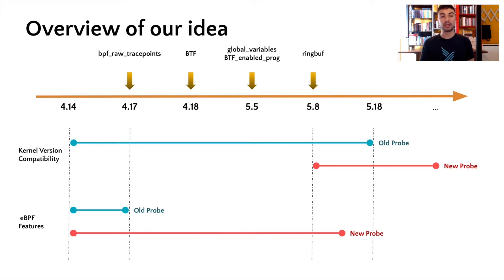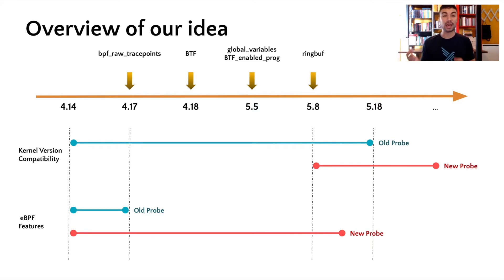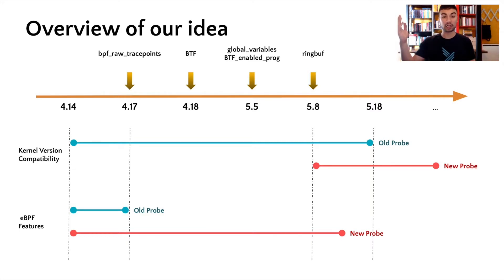That's exactly what we did. As you can see in the picture, the new BPF probe will not substitute the old one. Instead, the two are meant to complement each other. The old one will be the best option for old kernel versions and will benefit from a limited set of eBPF features, whereas the new probe will leverage BPF at its state of the art, but will target kernel 5.8 as the minimum supported version. That's the idea and now Andrea will go through some of the details.